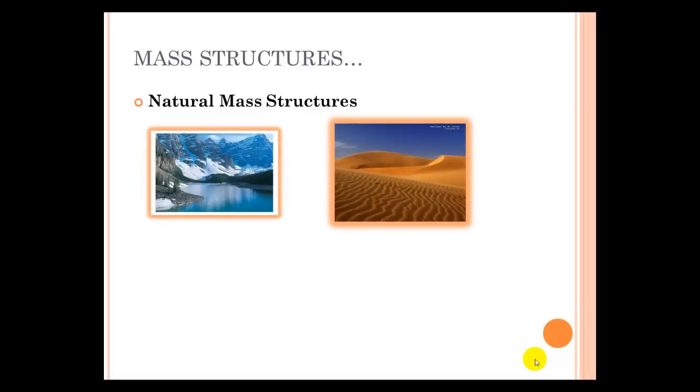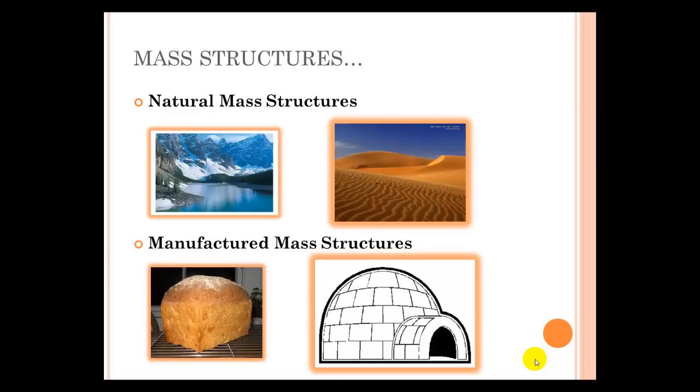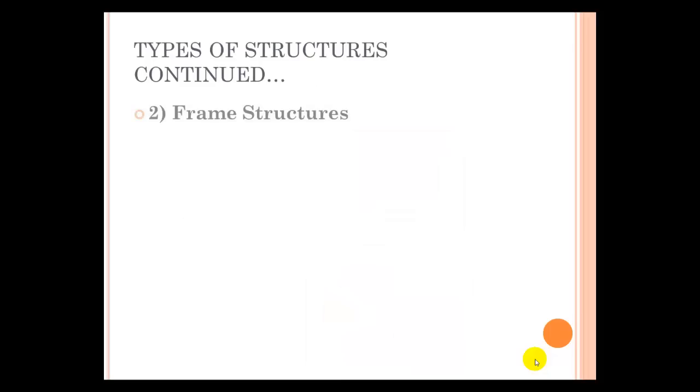So there are natural mass structures, and these include things like mountains, which are made of rocks, or sand dunes, which are made of sand. Manufactured mass structures, or things that we make, include bread. Bread is a pile of everything you mix together to make a loaf of bread. An igloo is a mass structure made of snow.